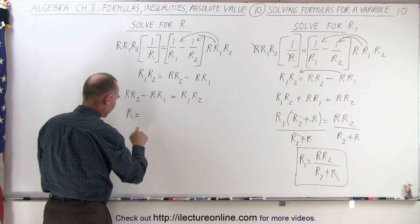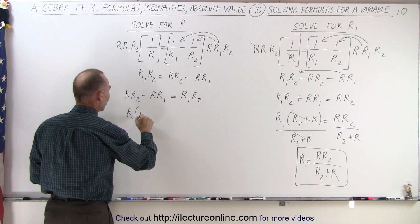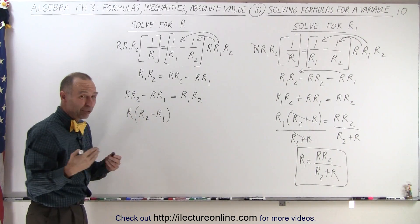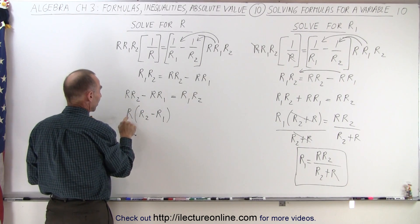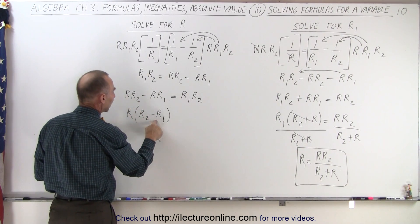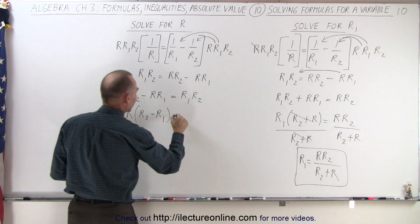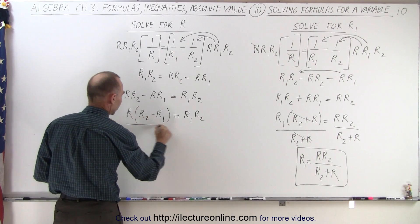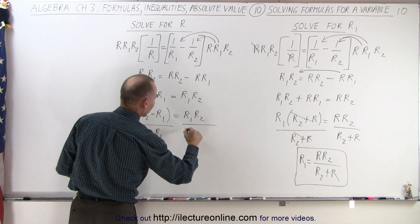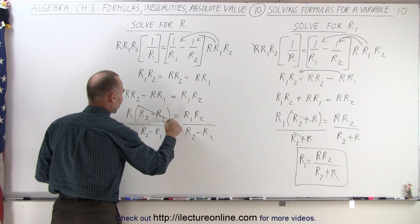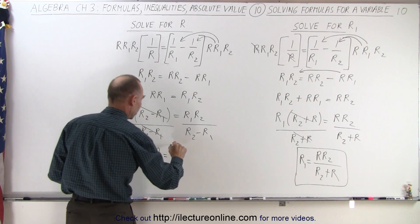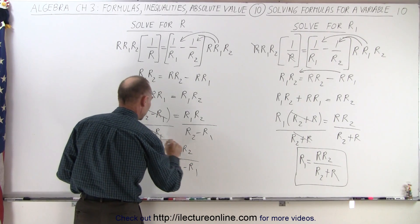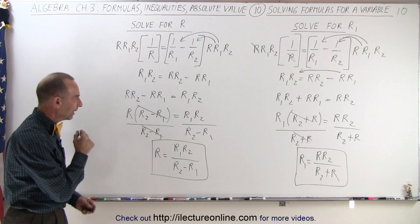I can factor out R on the left side, giving R times the quantity R2 minus R1, equals R1 times R2. I can verify this by multiplying back in: R times R2 gives the first term, R times negative R1 gives the second — correct. Now I divide both sides by R2 minus R1. It cancels on the left, and I end up with R equals R1 times R2 divided by R2 minus R1. That is the result solving for R, and that is how it's done.